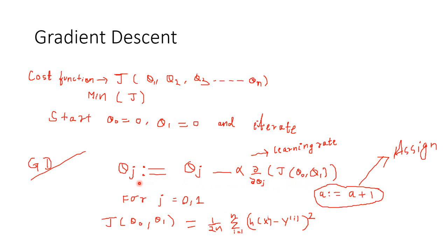We keep on doing this until the algorithm converges. What do we mean by converges? That means the value of theta j doesn't change further — it remains constant at one point. The best part of this algorithm is that we don't have to do it for an infinite period of time, because the second term — alpha and the partial derivative of the cost function — helps us minimize the number of steps required for iteration.